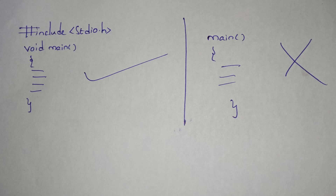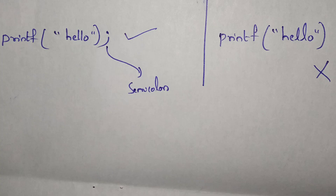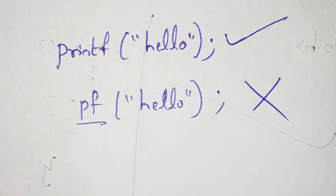Definitely you need to include header files first. After including header files, write the return type for the main function — either void or int main. Next, definitely include a semicolon for each and every statement.